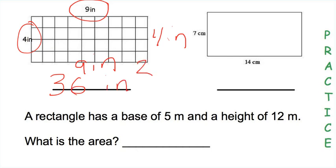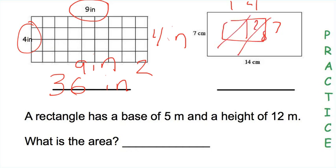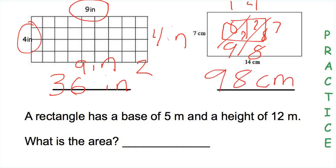Now let's find the area of this rectangle: 14 times 7. I'm going to set up a little lattice box right here — 14 times 7. 4 times 7 is 28, 7 times 1 is 7. So we have 98 centimeters squared as the area of that rectangle.